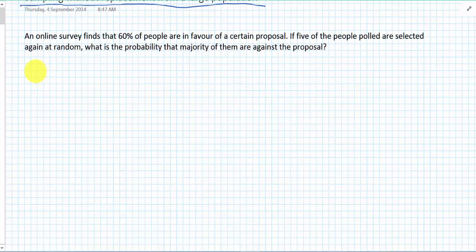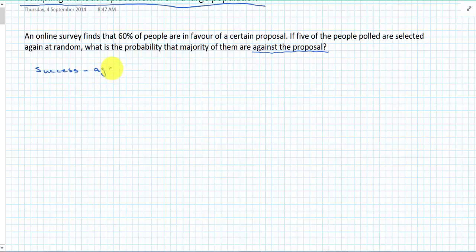So online survey finds that 60% of people are in favor of a certain proposal. If five of the people polled are selected again at random, what's the probability that majority of them are against the proposal? So what does majority mean? I'll give you a chance to formulate that in your head. I'm going to start with defining my success as against proposal and failure for proposal.